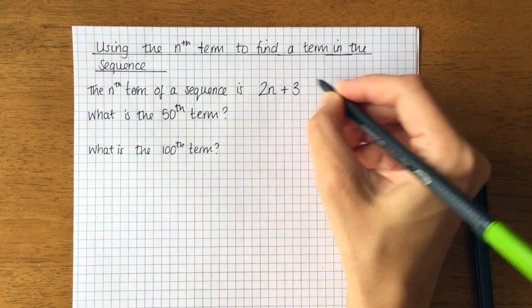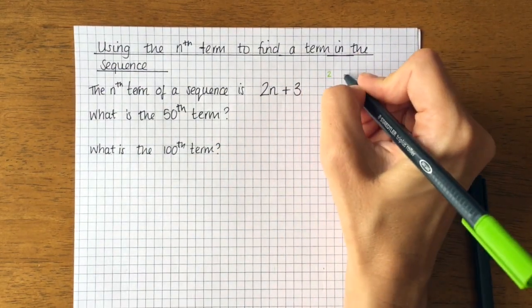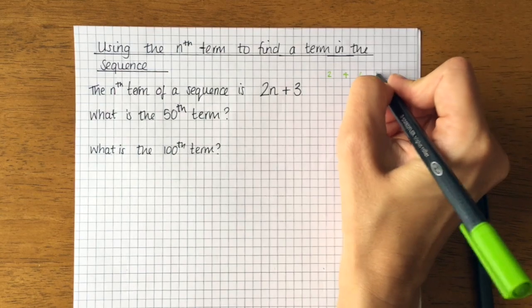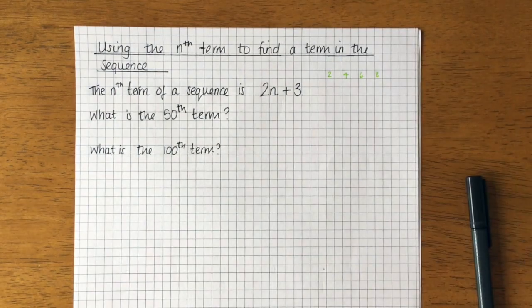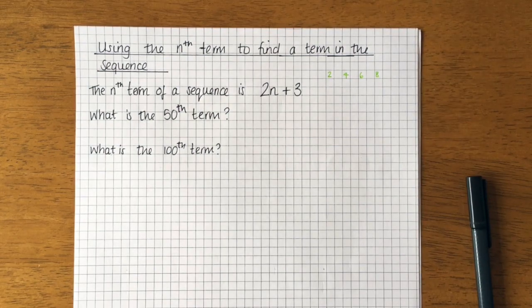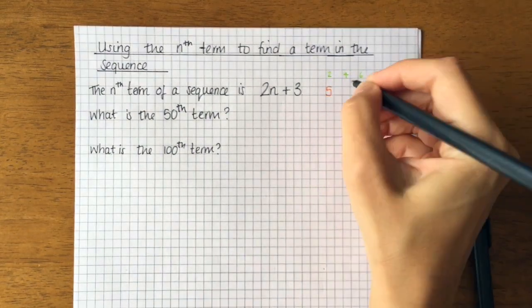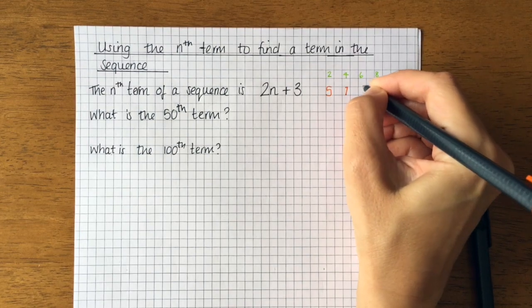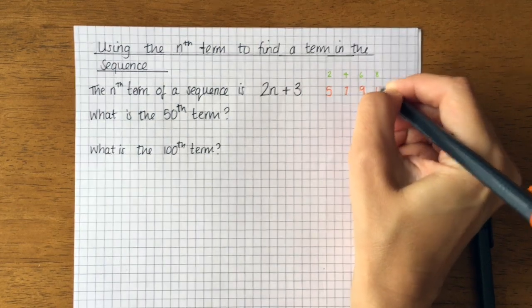So the first term, if I'm thinking about the two times table, I'll write that down first of all for you like this. And then I know I've got to add three to each of those. So what I would have is 5, 7, 9, 11.